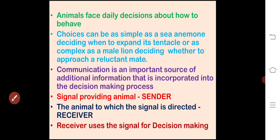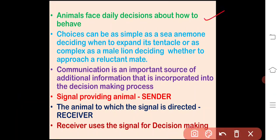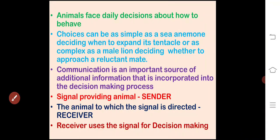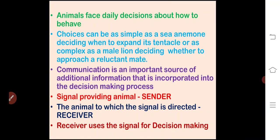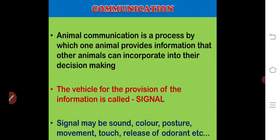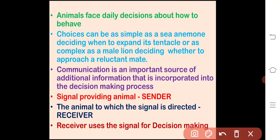Animals face daily decisions about how to behave. Choices can be as simple as a sea anemone deciding when to expand its tentacle or as complex as a male lion deciding whether to approach a reluctant mate. Communication is an important source of additional information that is incorporated into the decision making process. The animal which provides a signal is a sender, whereas the animal to which the signal is directed is known as a receiver. Receiver uses the signal for decision making.